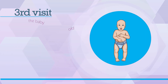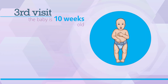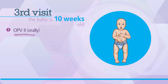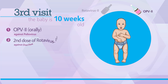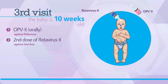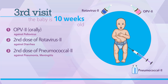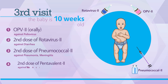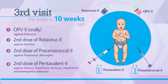The third visit is scheduled when the baby is 10 weeks old. On this visit, the second dose OPV2 is given orally along with the second dose of Rotavirus 2 vaccine, the second dose of Pneumococcal 2 administered intramuscularly in the left thigh, and the second dose of Pentavalent 2 administered intramuscularly in the right thigh.